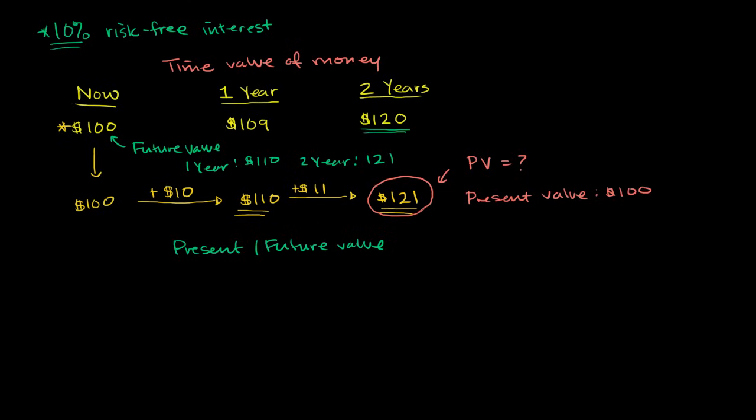And so with that in mind, let me give you one slightly more interesting problem. So let's say that I have, let's say we're going to assume this the whole time. That makes our math easy, a 10% risk-free interest. And let's say that someone says that they're willing to give us $65 in one year. And we were to ask ourselves, what is the present value of this? So what is the present value of this? So remember, the present value is just asking you what amount of money that if you were to put it in the bank at this risk-free interest would be equivalent to this $65. Which of these two are equivalent to you?